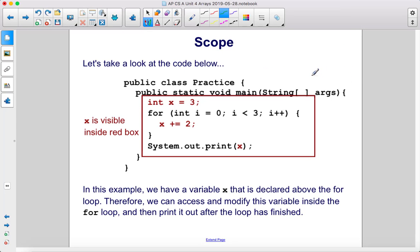Let's take a look at the code below. In this example, we have a variable x that is declared above the for loop. Therefore, we can access and modify this variable inside the for loop and then print it out after the loop has finished. x is visible inside the red box.